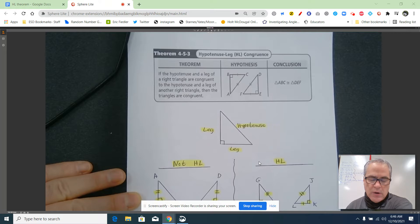So what you need is two right triangles where the hypotenuses are congruent and one pair of legs are congruent. Let's look at a couple examples.